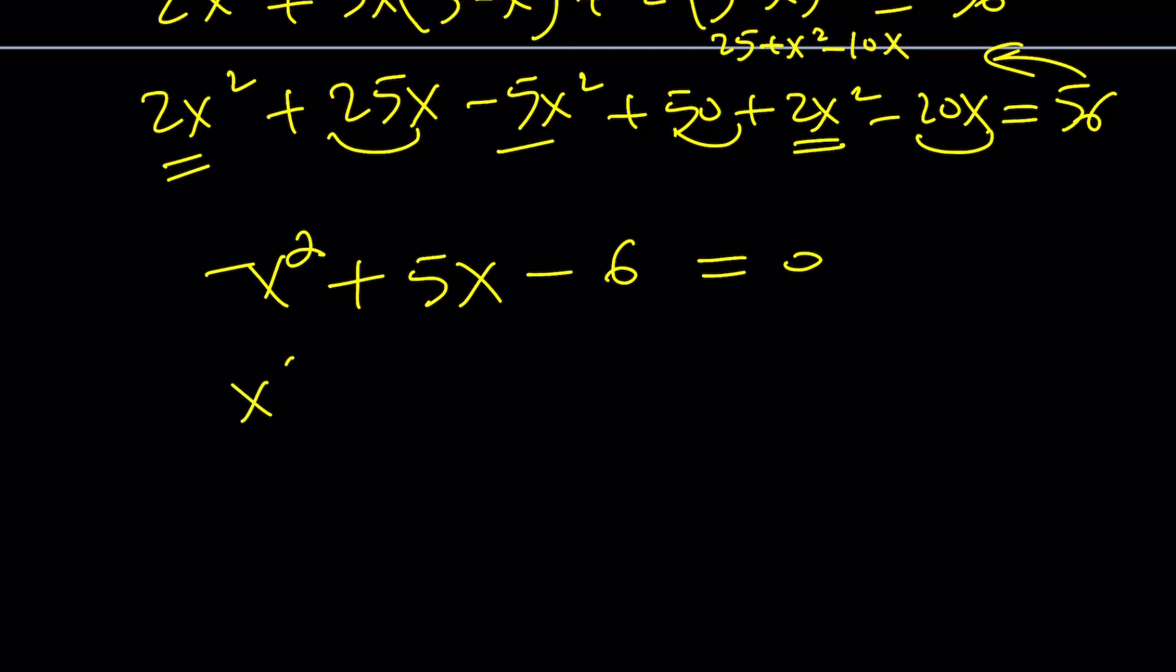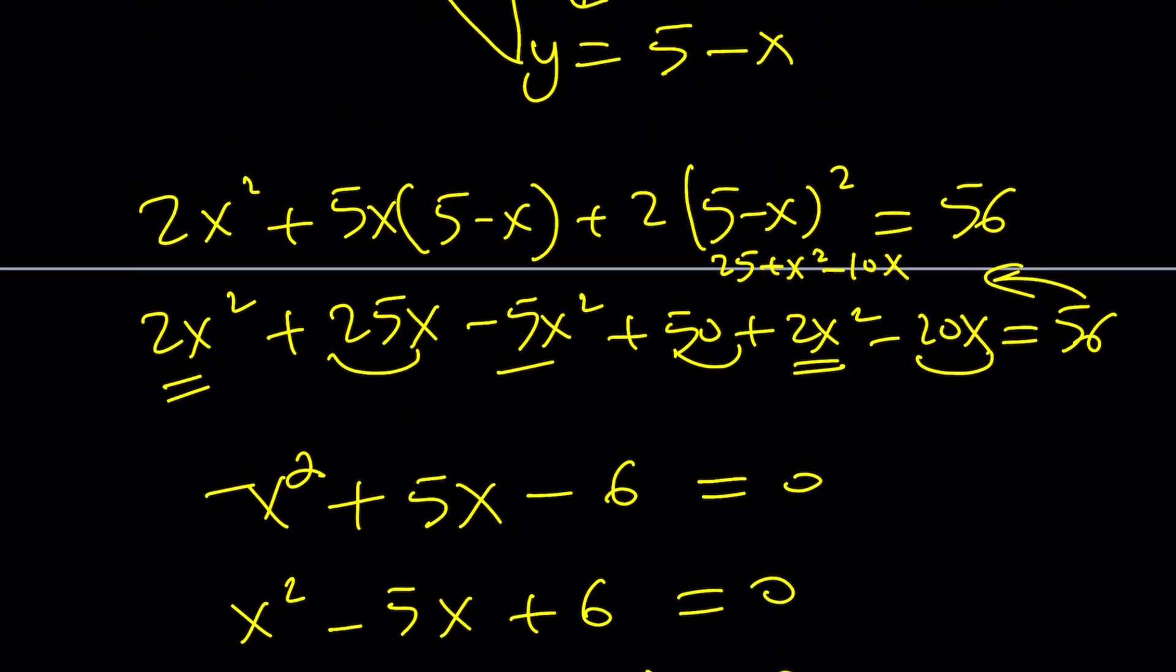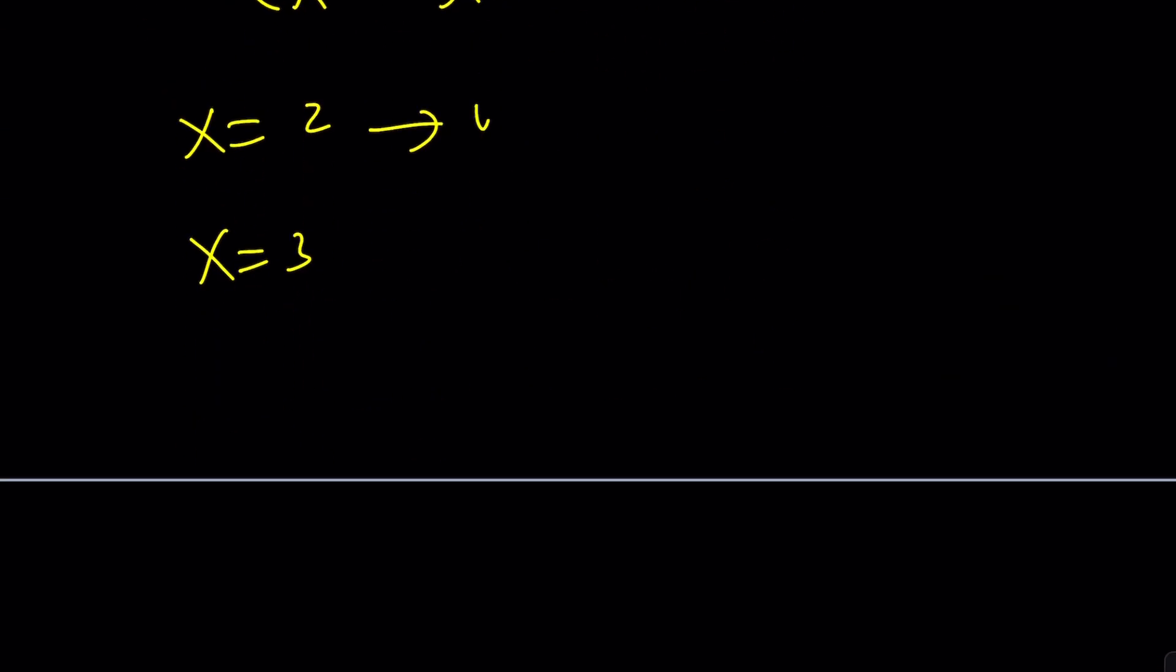Multiply both sides by -1 to make this equation more friendly. Now we get a quadratic which is factorable. x equals 2 or x equals 3. Of course, y equals 5 - x. If x is 2, y is 3. And if x is 3, y is 2. Which gives us the exact same solutions.